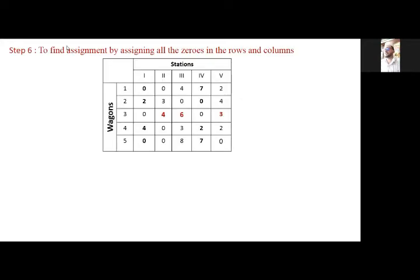As we get lines equal to rows, the next step will be assignment. For assignment, the technique is: look for rows where a single zero appears. First line has two zeros — leave it; second line two zeros; third line two zeros; but the fourth line has a single zero, so I assign it by making a box over it. As soon as I assign station 2 to wagon 4, zeros in that row or column are cancelled out, since one job can be assigned to one person only.